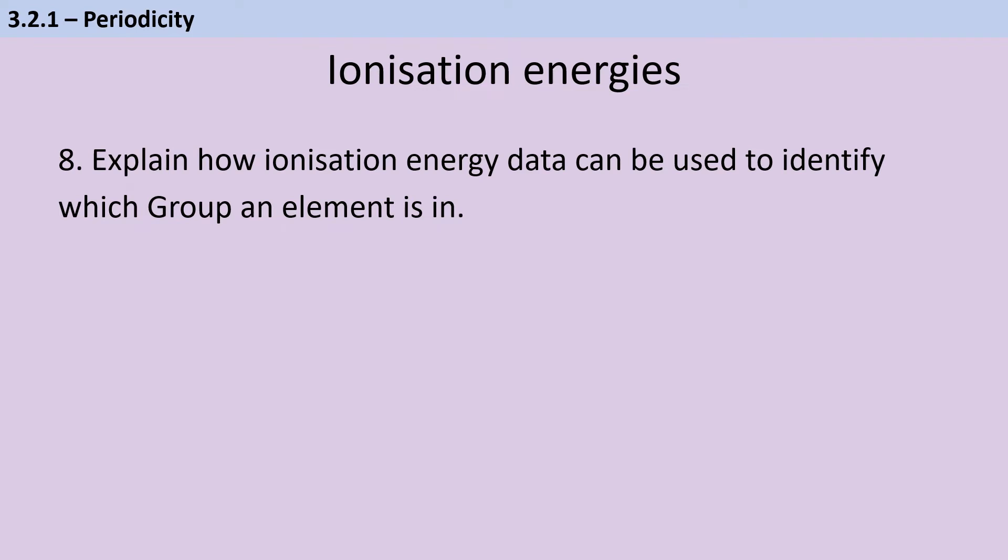When trying to determine which group an element is in, you want to look at the successive ionization energies—the first, second, and third ionization energies—and compare their sizes. As you keep going, they keep getting bigger. But at some point, you'll see a significant jump. This happens when we start removing electrons from a new shell. When you run out of electrons in the third shell and remove one from the second shell, that second shell is much closer to the nucleus and requires a lot more energy to remove that first electron.